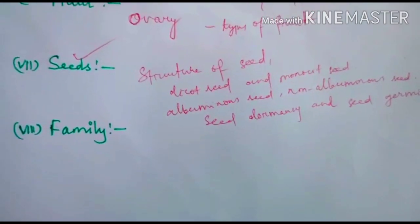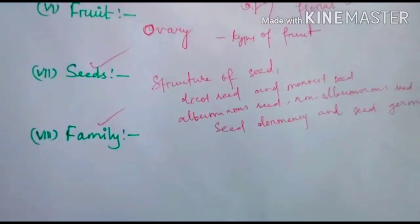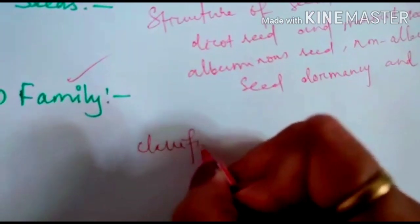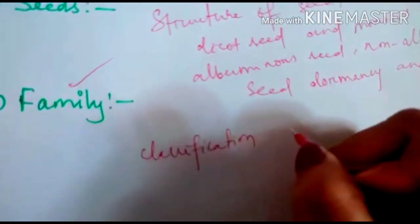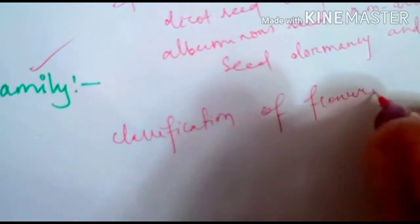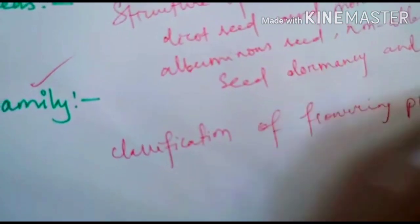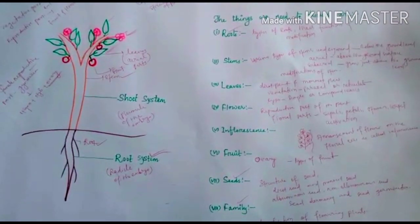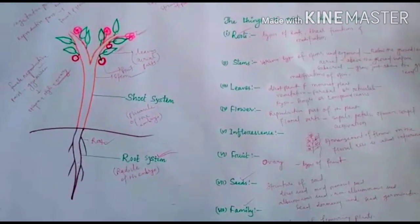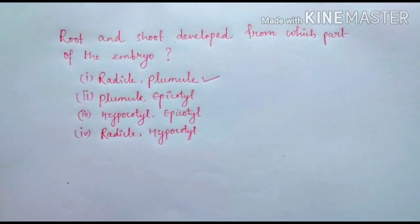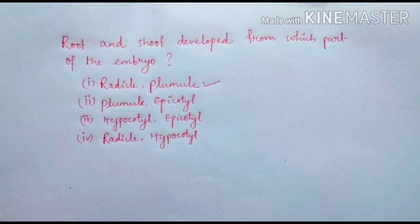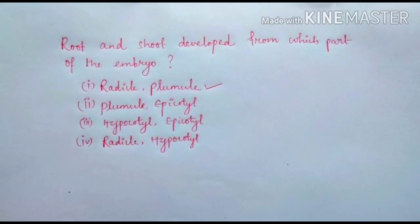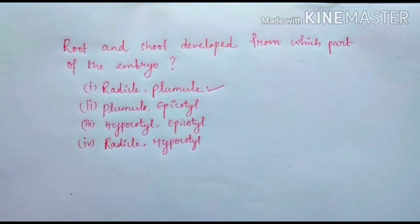At the end, we will talk about the families in which all the flowering plants are classified — the classification of the flowering plants. The answer to the question is radicle and plumule — the root is developed from the radicle, and the shoot is developed from the plumule.